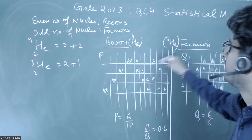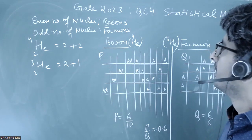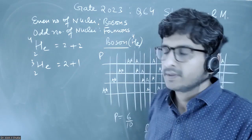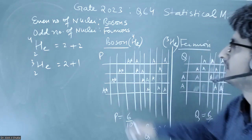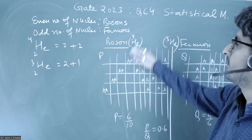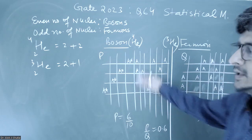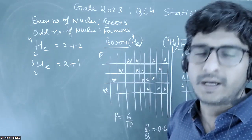Helium-3 will have odd number of nuclei, which will be fermion. They are saying that two particles, that means two helium-4 or two helium-3 particles, are to be distributed into four energy levels.